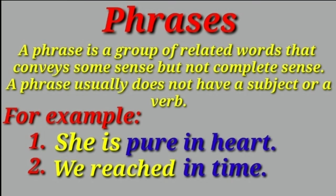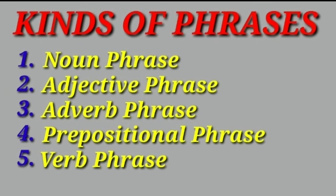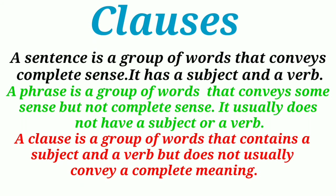So, students, a phrase is a group of related words that conveys some sense but not complete sense. A phrase usually does not have a subject or a verb. The five types of phrases are: noun phrase, adjective phrase, adverb phrase, prepositional phrase, and verb phrase. We have also learned that a sentence is a group of words that conveys complete sense — it has a subject and a verb — whereas a phrase conveys only some sense and usually does not have a subject or a verb.